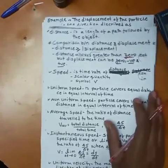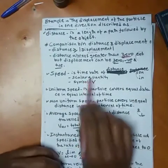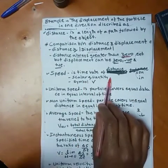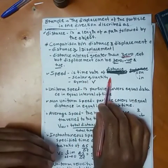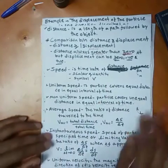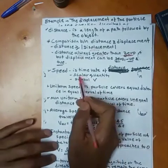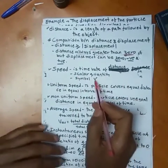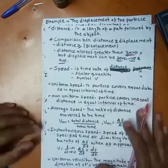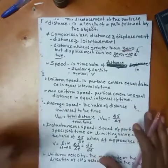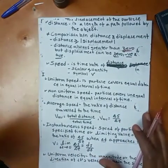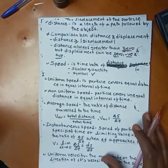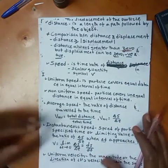Speed is the time rate of distance — that is, distance per time. It is a scalar quantity, meaning it has magnitude only and no direction.